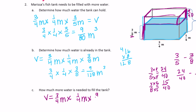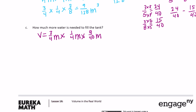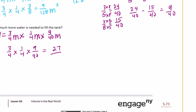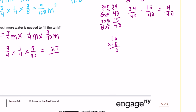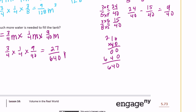The volume of the missing top piece: 3/4 times 1/4 times 9/40. That's 27 over 640 meters cubed — wait, 4 times 4 is 16, times 40 is 640. So 27/640 meters cubed is the volume needed to fill the tank.